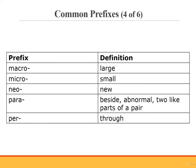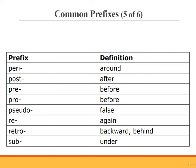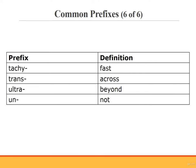Micro. Neo. An example of a medical term using the prefix neo, which means new, is neonatology. The medical term means study of the newborn. Para. Peri. Post. Pre. Pro. Pseudo. An example of a medical term using the prefix pseudo, which means false, is pseudocyesis. Pseudocyesis means false pregnancy. Re. Retro. Sub. Tachy. Trans. Ultra. Un.